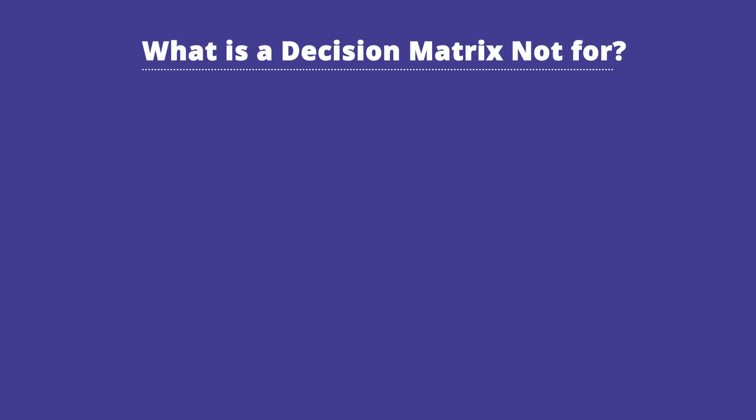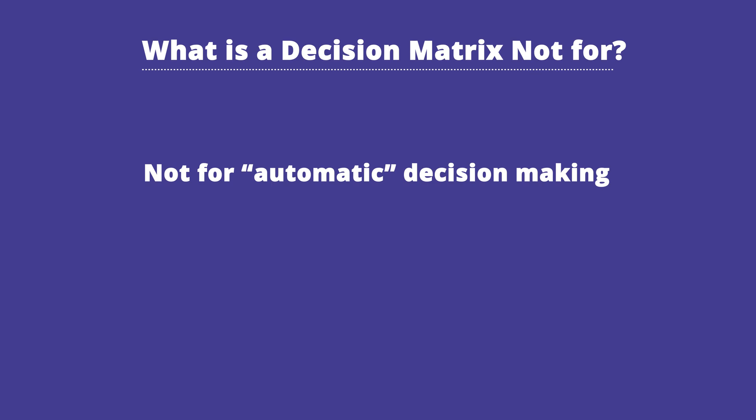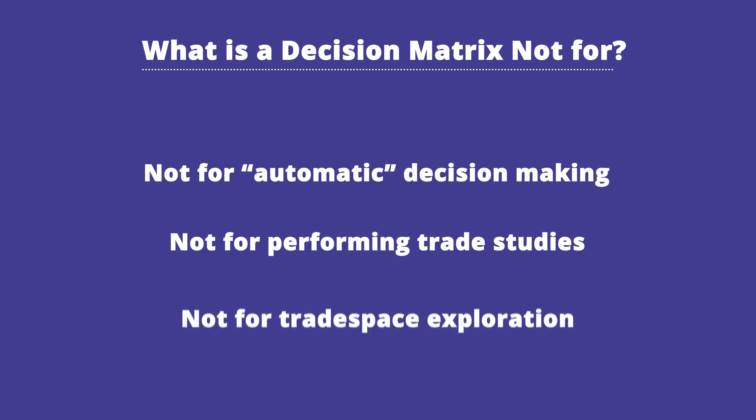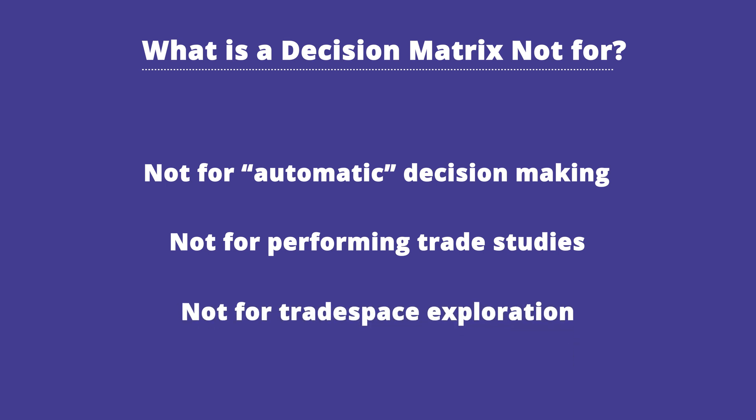What is a decision matrix not for? It's not for automatic decision making. The scores and numbers are for guidance only and shouldn't be summed up algebraically, although we see plenty of instances where people do that in practice. It's also not for performing trade studies or trade space exploration, as we'll understand as we get further into the course.